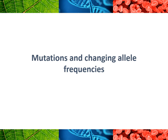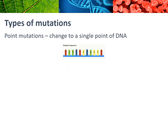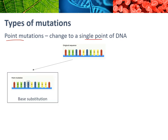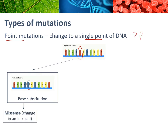We're going to start by looking at mutations and causes of changing allele frequencies. With mutations we mainly look at the impact of point mutations, which is when you get a change to a single point of DNA. There are a couple of different things that can happen. You can have a base substitution — for example, you can see that the T there has been substituted for a C. There are three different impacts that a base substitution can have on the protein that the gene codes for.